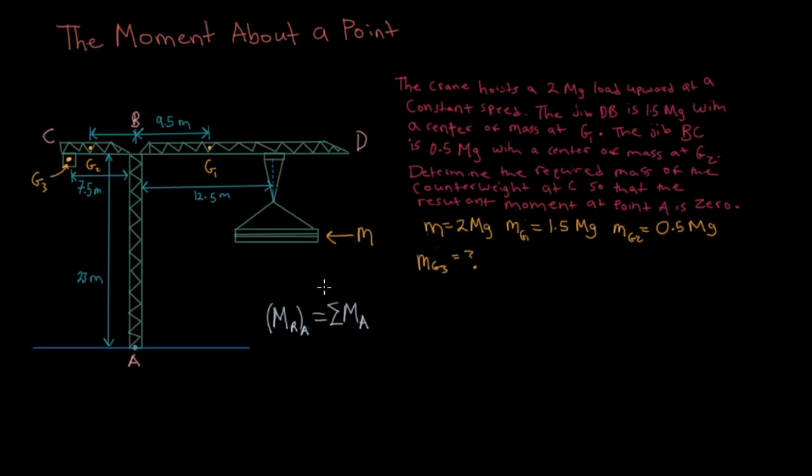To do this we would just use our sum of moments equation here. As we know, the sum of moments about point A, or the resultant moment about point A, is equal to the sum of moments about point A.